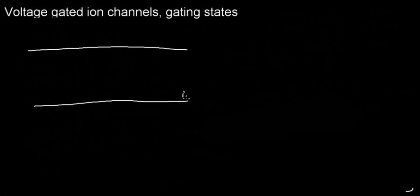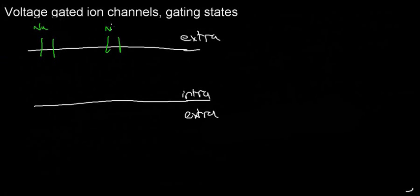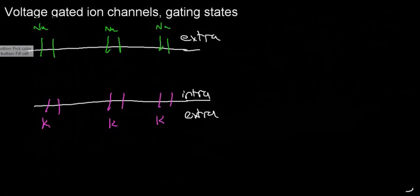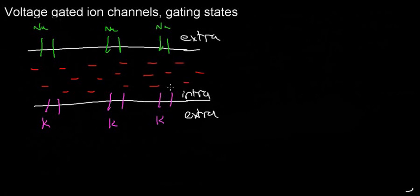Let me give you the intuition of how it plays out. This line is the intracellular side, and this is the extracellular side. Along my membrane I have sodium channels in green, and I also have potassium channels. When these gates are closed, the inside of my cell is going to be quite negative — that's the resting membrane potential, roughly around minus 70 millivolts for a nerve cell.